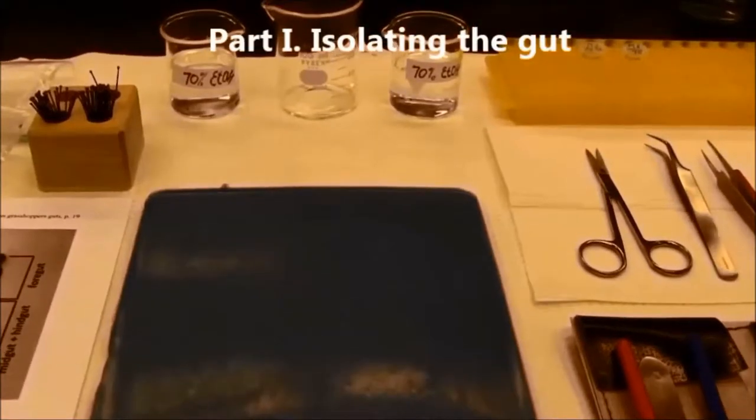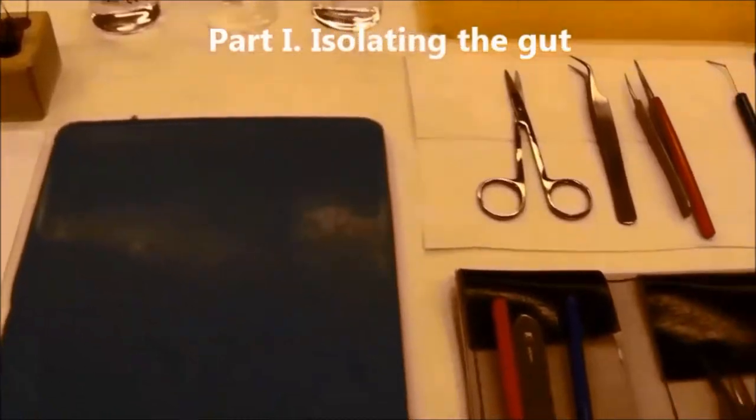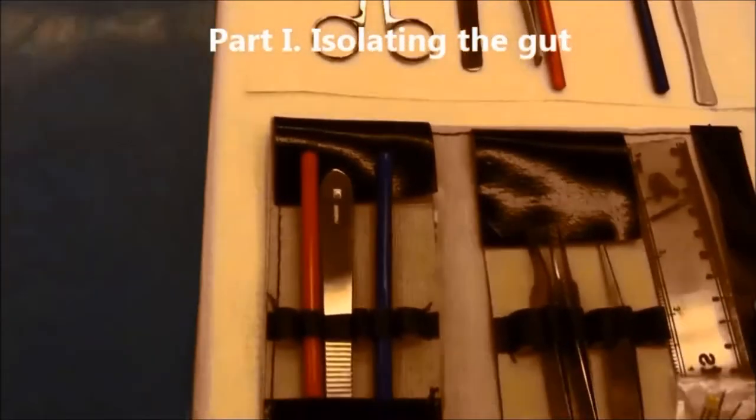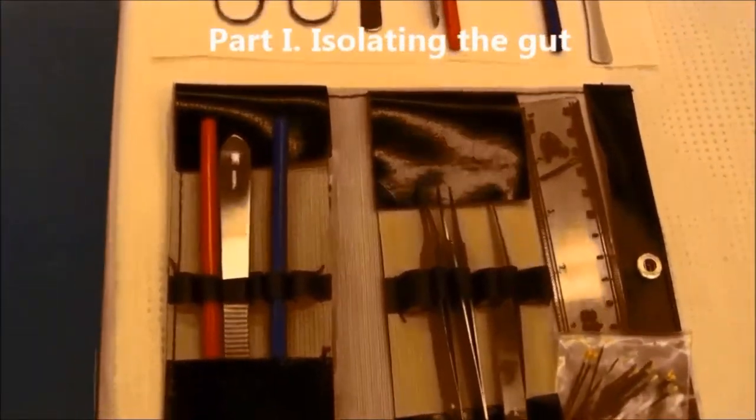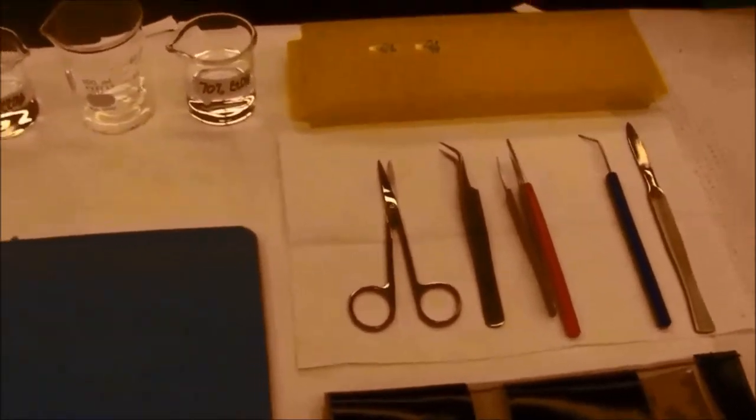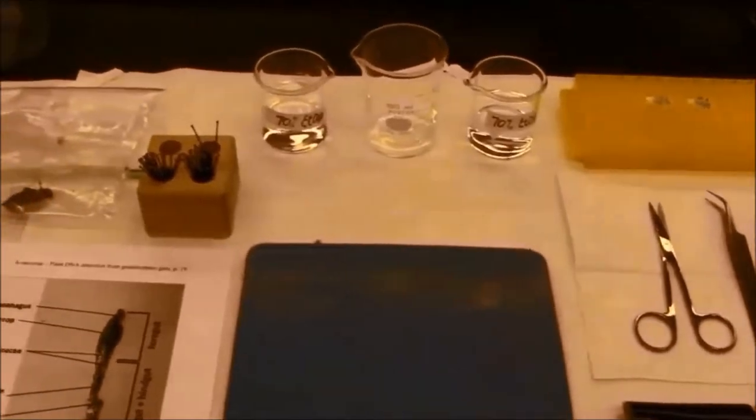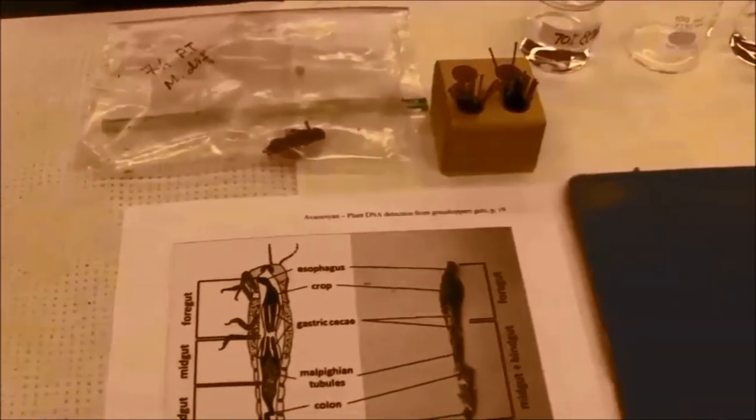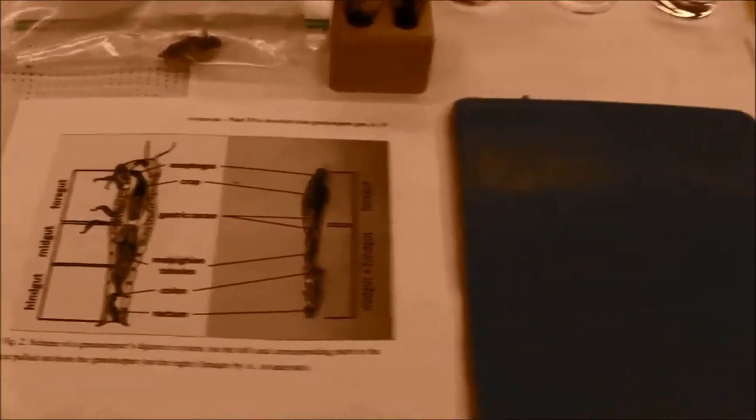To dissect a grasshopper, I will need a small dissecting pad, a standard dissecting set which includes scissors, forceps, and a scalpel, microcentrifuge tubes, ethanol, insect pins, and a scheme of a grasshopper's internal structure.